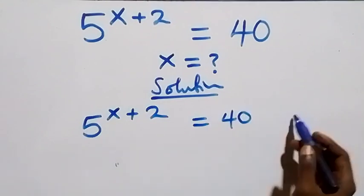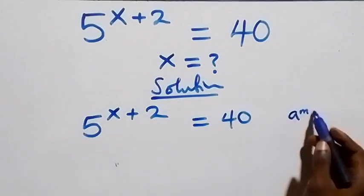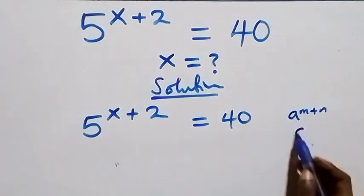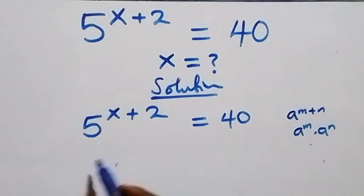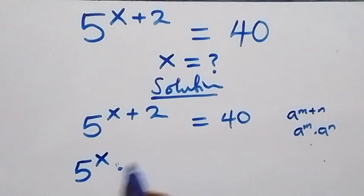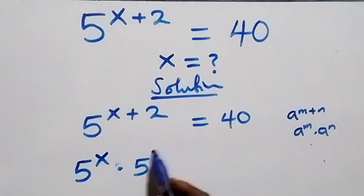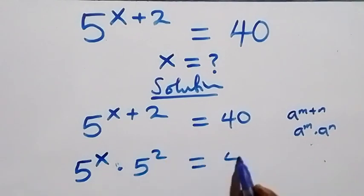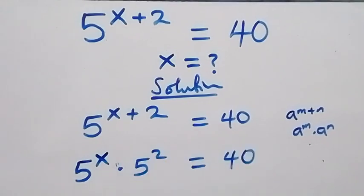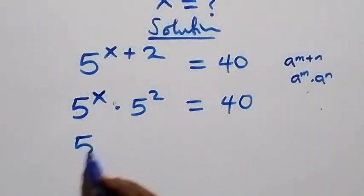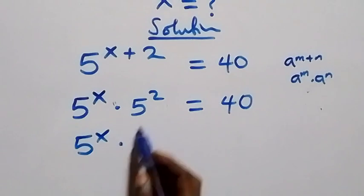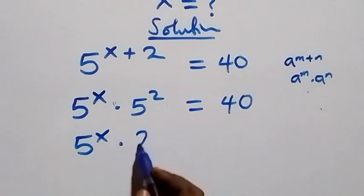This follows from the rule that a raised to power n plus m equals a raised to power n times a raised to power m. So here this becomes 5 raised to power x times 5 squared equals 40 on this side.